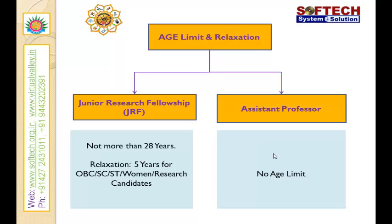Coming to the age limit and relaxation: for junior research fellowship, candidates falling under the general category must not be more than 28 years. Relaxation is given for OBC, SC, ST, women and research candidates — they get a relaxation of five years, meaning they should not be more than 33 years. For assistant professor, there is no age limit set.